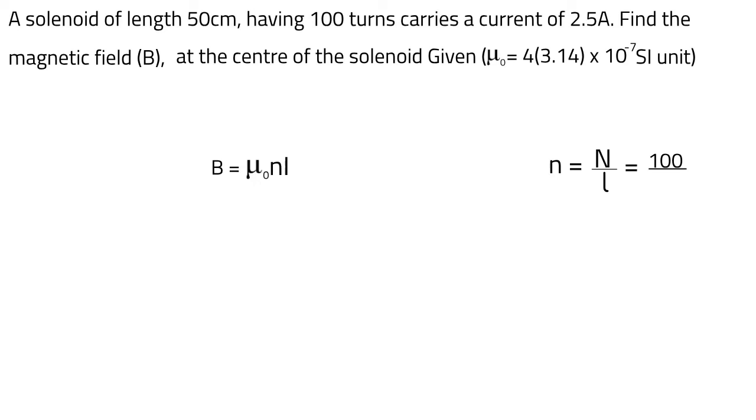We know N = 100 turns and L = 0.5 meters. Therefore, n = N/L = 100/0.5 = 200 turns per meter.